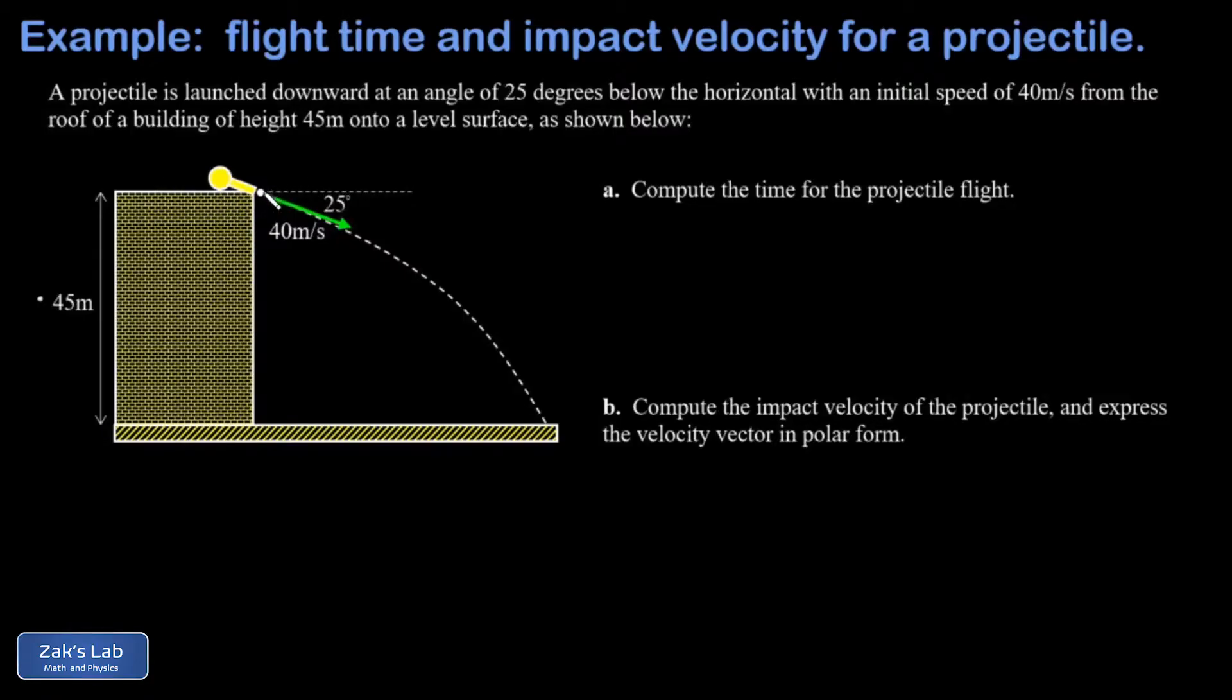We start the problem by decomposing the initial velocity vector into its x and y components. That vx component is going to be 40 cosine of 25, and when I run the numbers on that, that's approximately 36.3 meters per second.